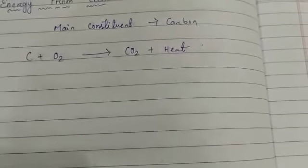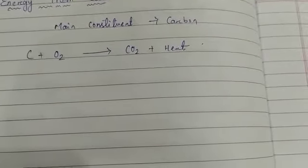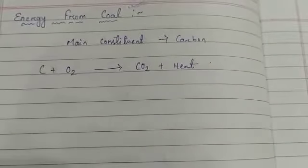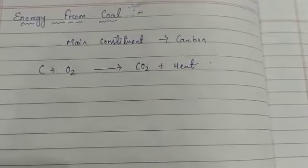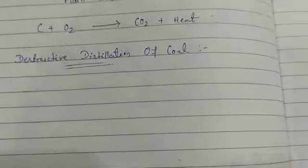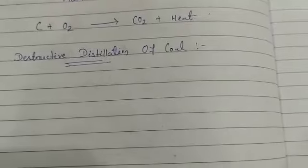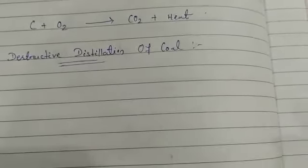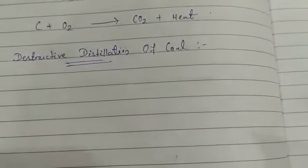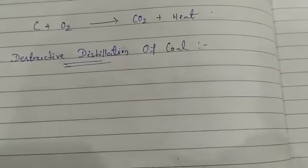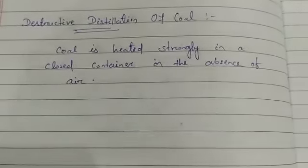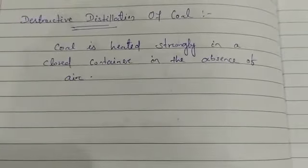Coal is not only burned to produce energy — it is also used to obtain more useful products. By the destructive distillation of coal, that means when coal is heated strongly in a closed container in the absence of air, we can get many useful products. This process gives useful substances like coal gas, coal tar, and coke.